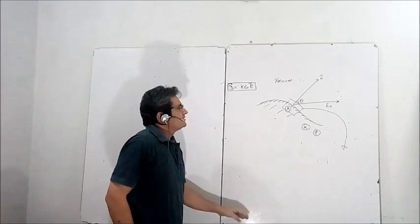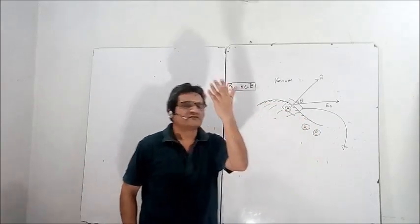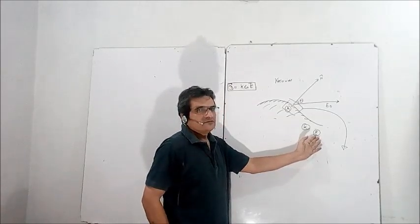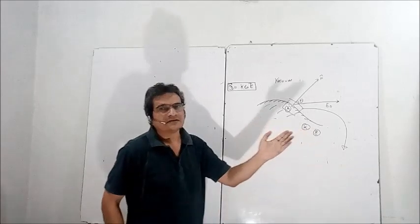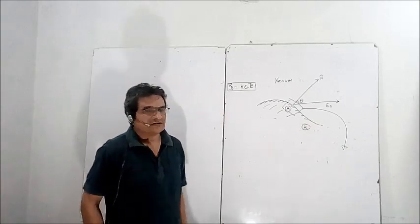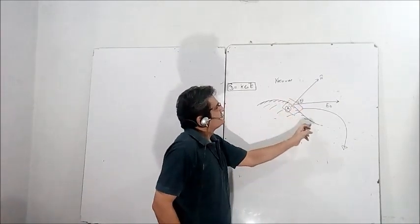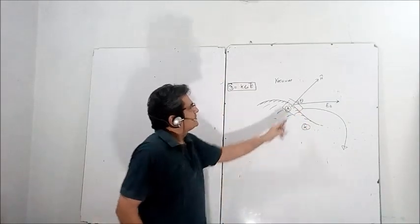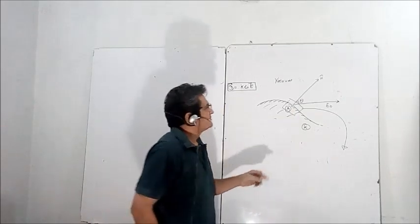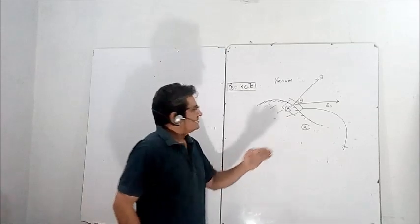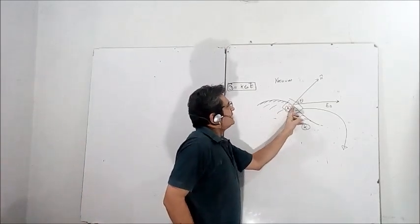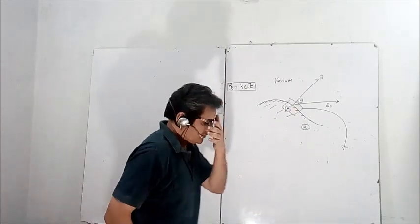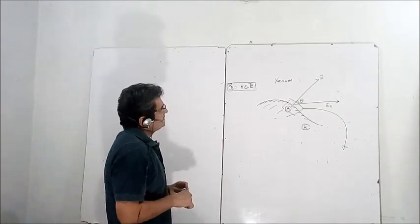The problem is taken from Irodov. We have an arbitrary shape — a surface of a dielectric with dielectric constant K (denoted epsilon in the Irodov book, but we use K, which is the relative permittivity). This is the normal vector to the surface of the dielectric, and the electric field makes an angle theta with this surface at point A. We have to find three things: the angle of the electric field inside the dielectric, the magnitude of the electric field inside the dielectric, and the bound charge on the surface of the dielectric.